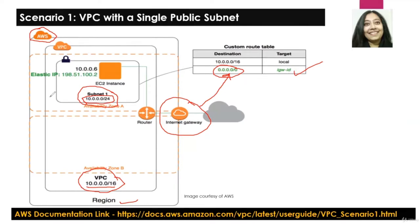Once we have the basic setup — our VPC, subnet, internet gateway associated, and route table with non-local traffic directed to the internet gateway — the next thing is to add an EC2 instance. After launching the EC2 instance, its private IP address is 10.0.0.6. We need to associate an elastic IP address to this EC2 instance.